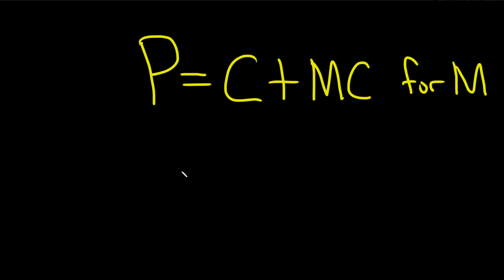Solve the equation for big M. So we have P equals C plus MC. So to solve for big M, we need to get this big M by itself on one side.